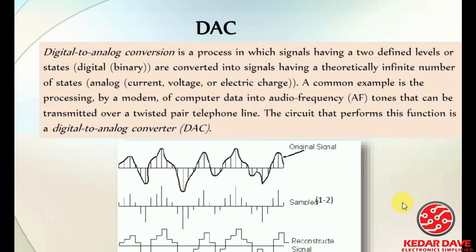The process of digital to analog conversion works by taking samples from the digital signal and reconstructing the analog signal. From these samples, the reconstructed signal can be seen at the output.